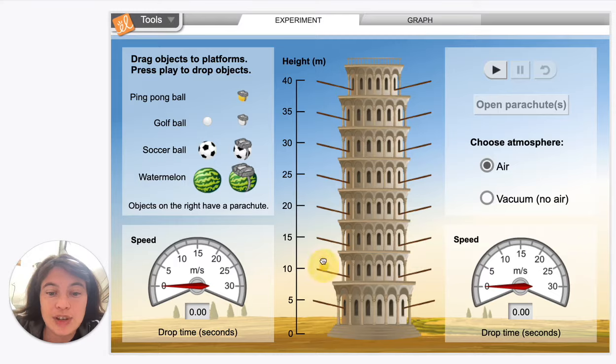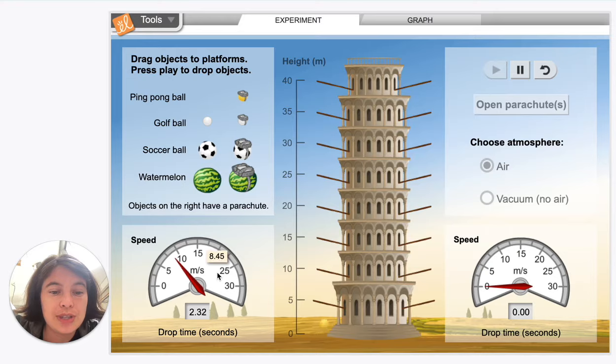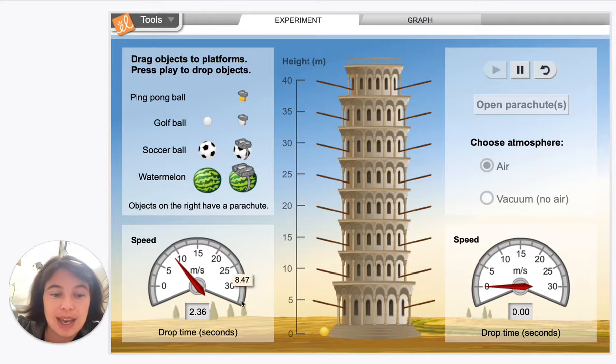If this falls a distance of 15 meters, you can see the velocity increased up to 8.46 meters per second, and it took 2.36 seconds to fall.